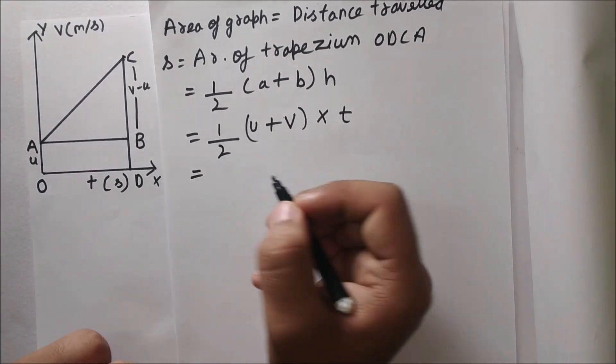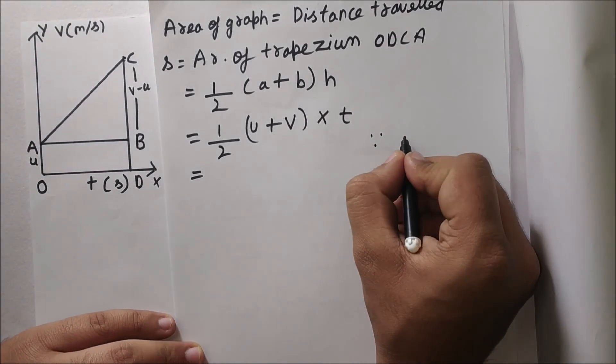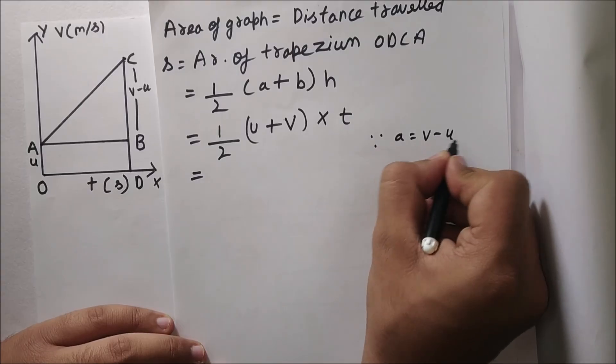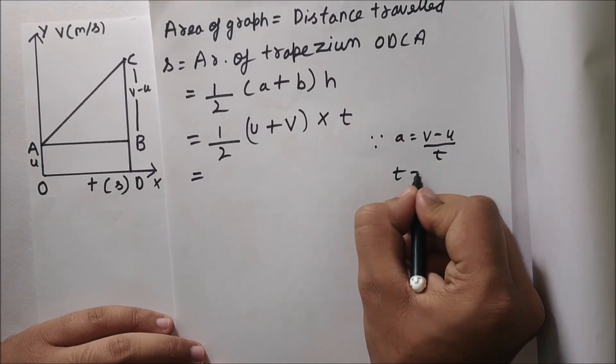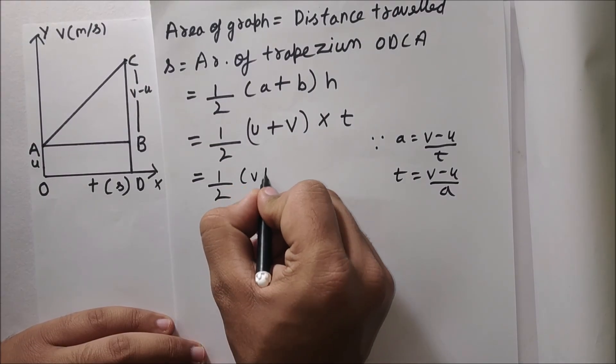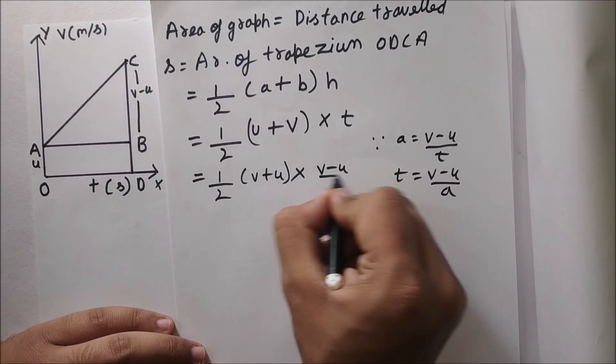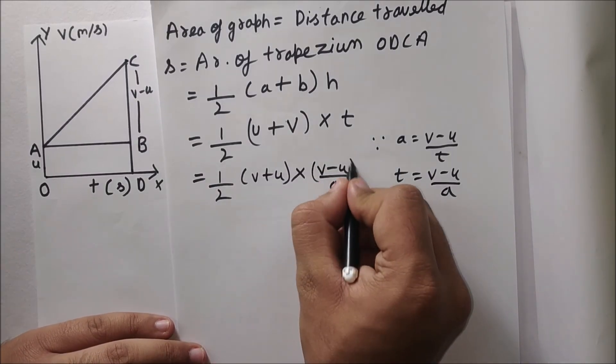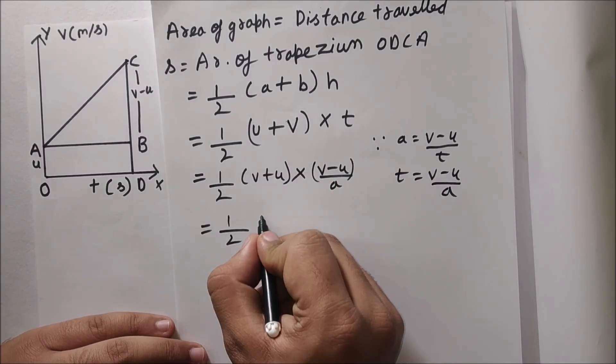We know that a equals to v minus u by t. So when t goes on to the LHS, we can find out the value of t, that's v minus u by a. So we can substitute v minus u by a instead of t.